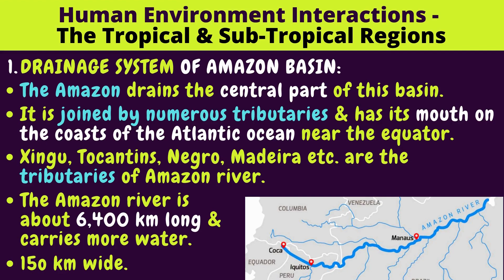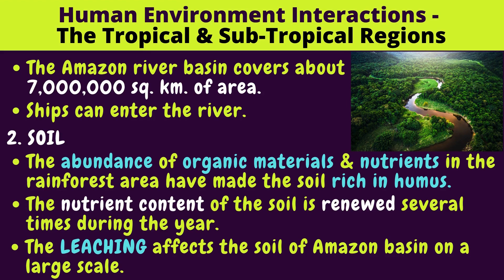Drainage system of the Amazon Basin: The Amazon drains the central part of this basin. It is joined by numerous tributaries and has its mouth on the coast of the Atlantic Ocean near the equator. The dark blue thick line on the map is the Amazon River. Zingu, Tocantins, Negro, and Madeira are the tributaries of the Amazon River. The Amazon River is about 6,400 kilometers long, carries a lot of water, and is 150 kilometers wide. The Amazon River Basin covers about 70 lakh square kilometers of area, and ships can enter the river.